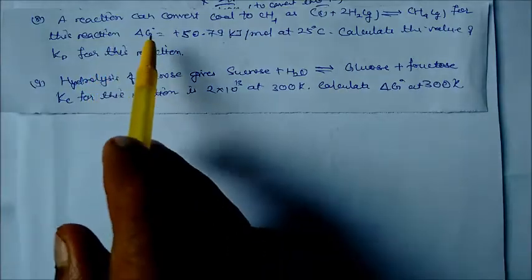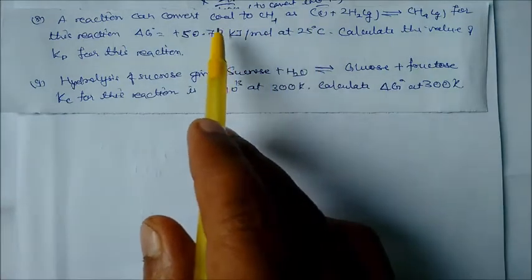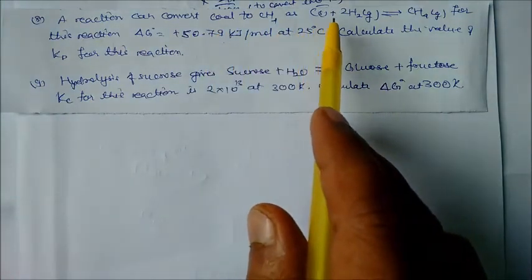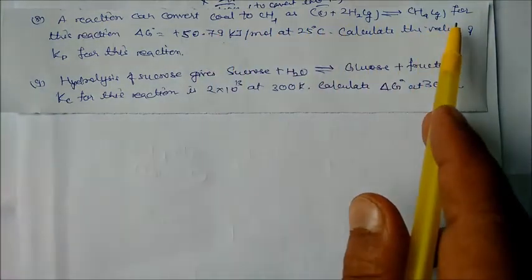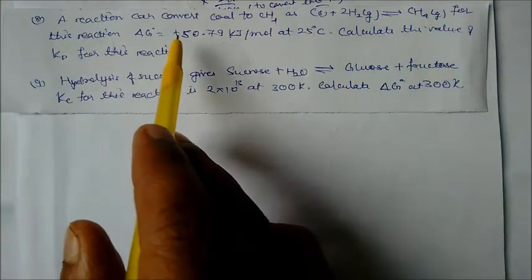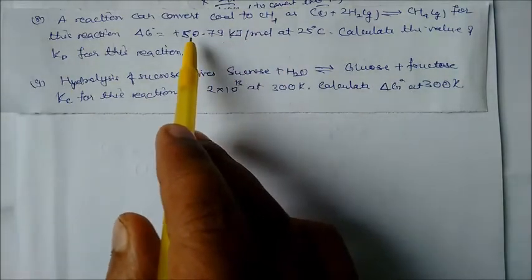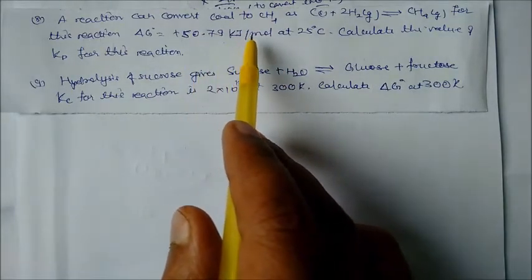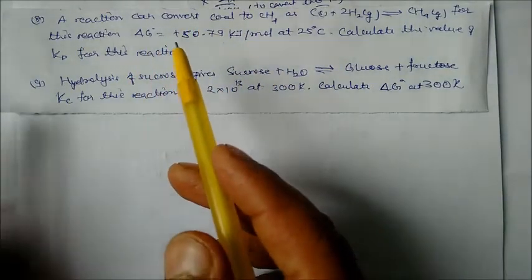A reaction that converts coal to methane: C(s) + 2H₂(g) ⇌ CH₄(g). For this reaction ΔG° = +50.7 kJ/mol (positive value). Calculate the Kp value.